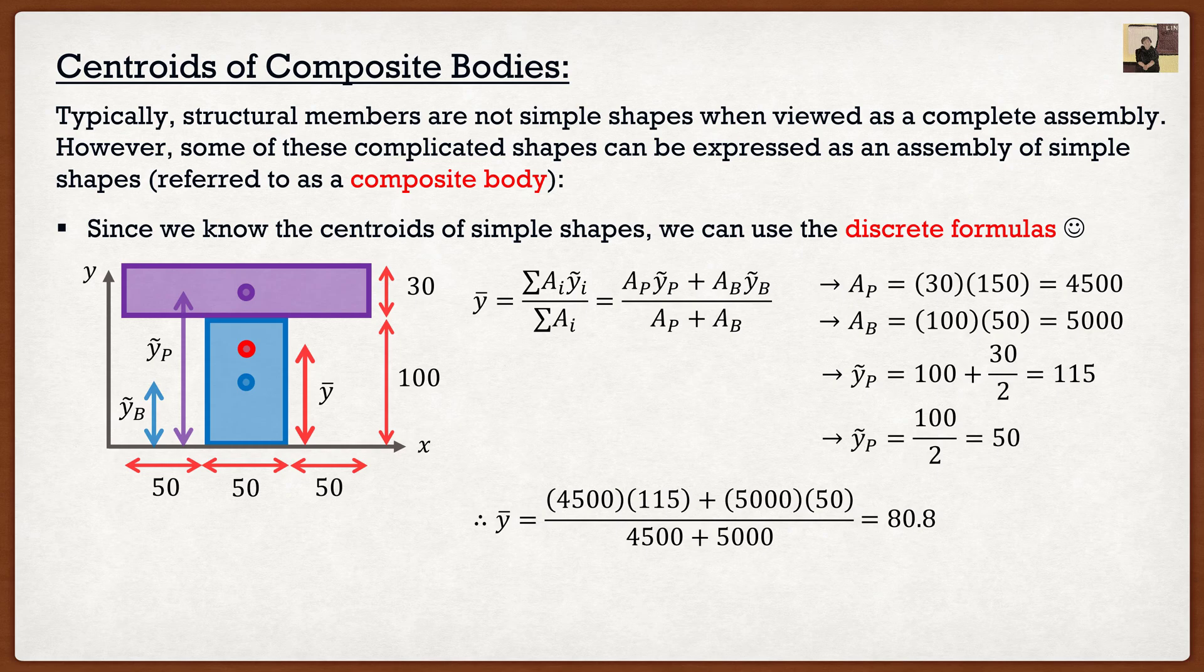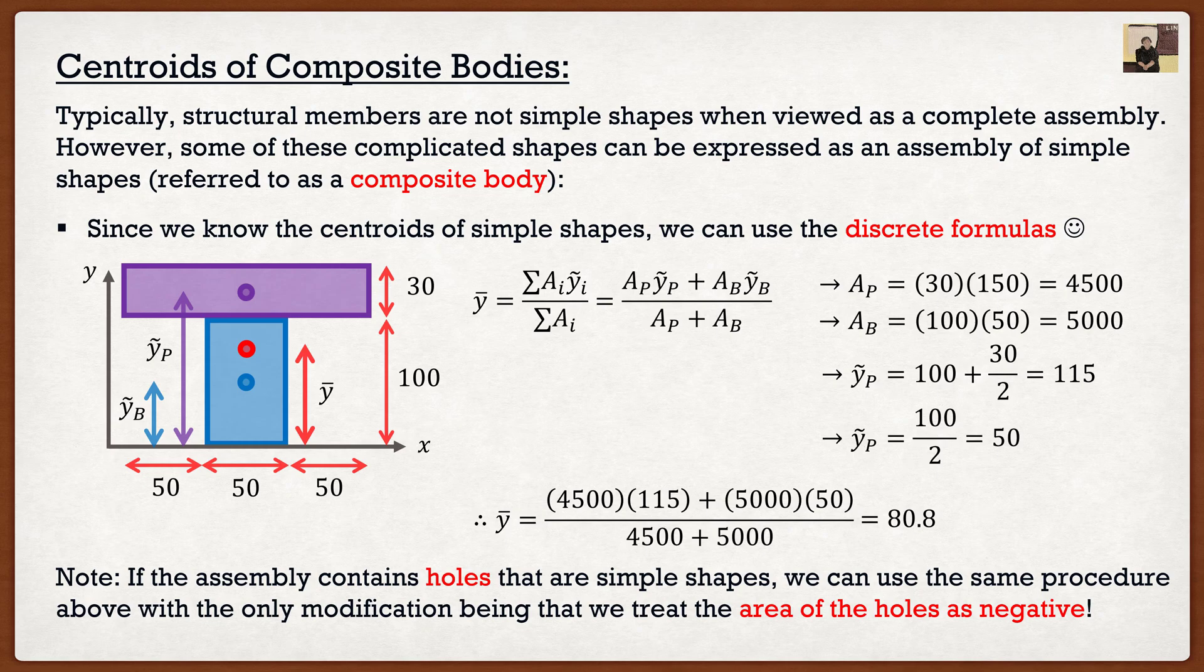One of the tricks that professors will try and do to sway you from the correct course is they'll give you a composite shape with a hole in it, with a hole. Every time students see a hole, they think that they have to go back to integration because it's something complex. But when we have an assembly that has holes, we actually do the same process. But all we have to do to modify it is the area of a hole is negative. That's it, because we're actually taking away area from our shape.